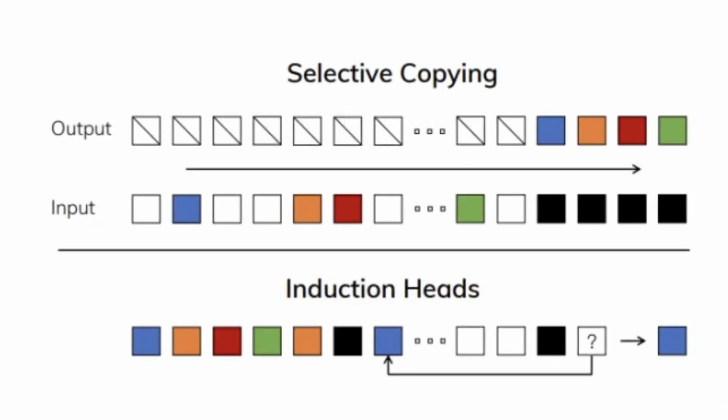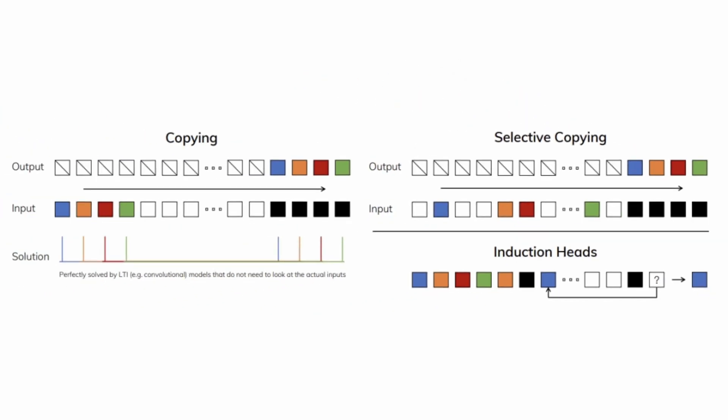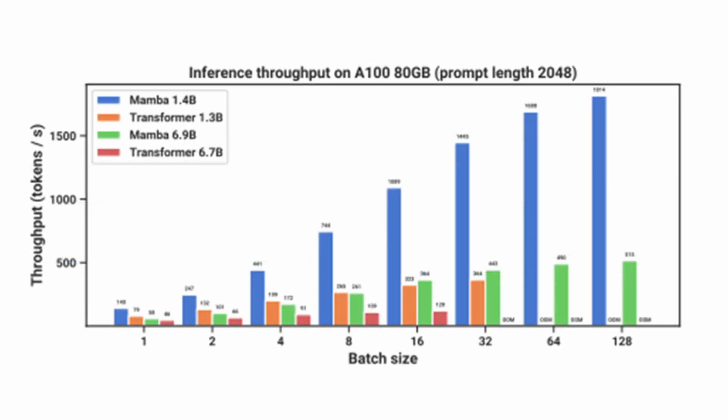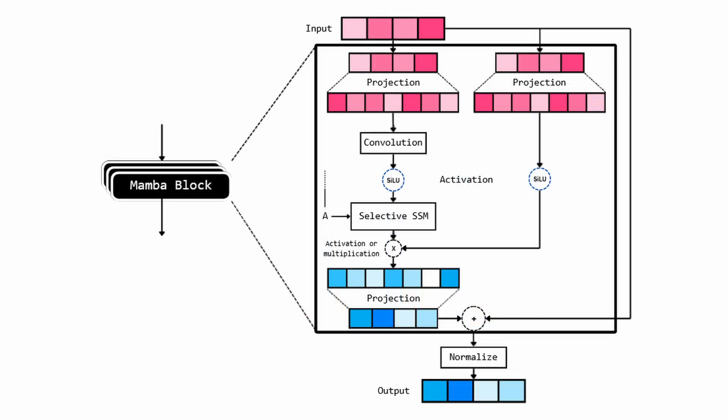SSMs use recurrent models that process information selectively, whereas transformers process information sequentially. This allows Mamba to filter out unnecessary information and focus on the main parts of the context, enabling faster inference on bigger contexts. The architecture of Mamba is also pretty simplified and much more hardware efficient as well.